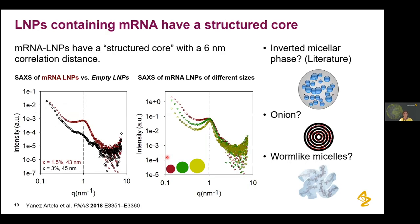Before doing SANS, we first did SAXS. Interestingly, when mRNA is inside the LNPs, we can see one peak at approximately 1 inverse nanometer, corresponding to a correlation distance of around 6 nanometers. This peak only appears in the presence of mRNA. We see the same peak position independently of LNP size, just with different intensity. However, with only one peak it's difficult to fit a model — it could be an inverted micellar phase, a multilamellar vesicle, worm-like micelles of mRNA, or correlation distance between micelles. We didn't know.